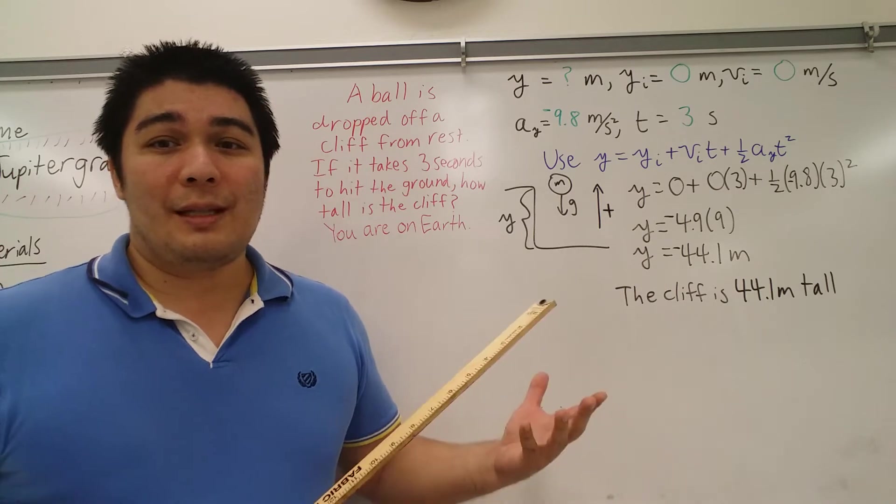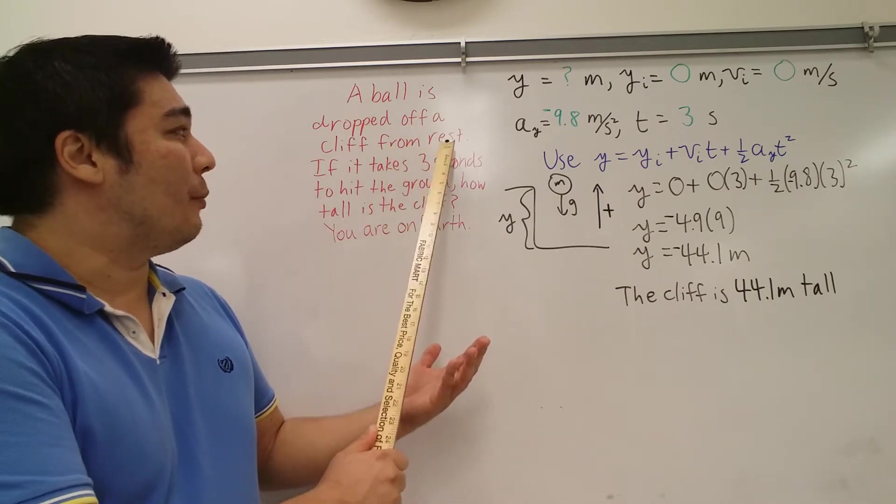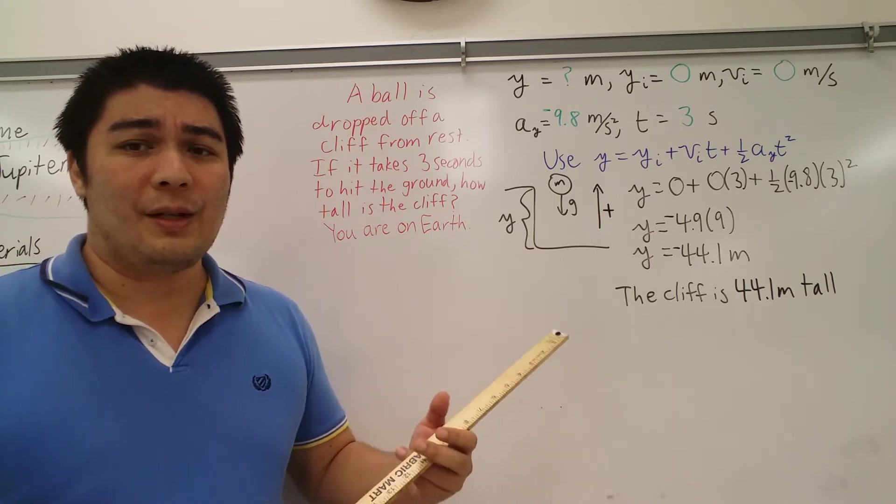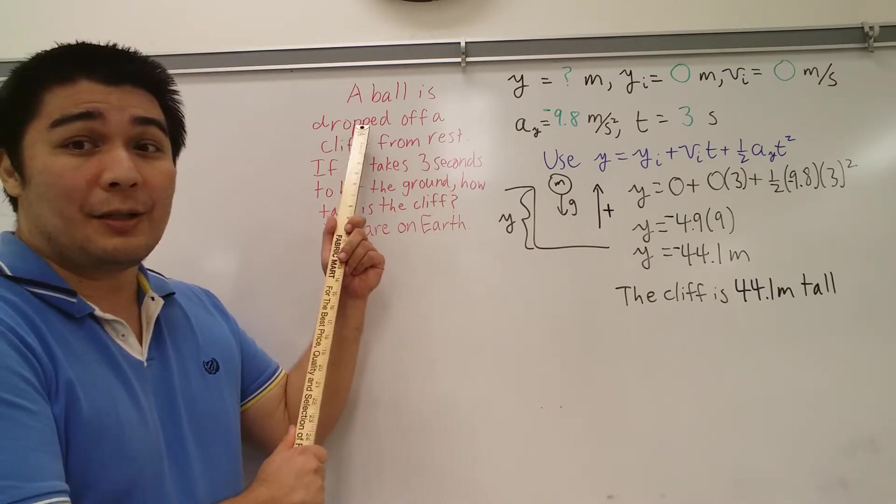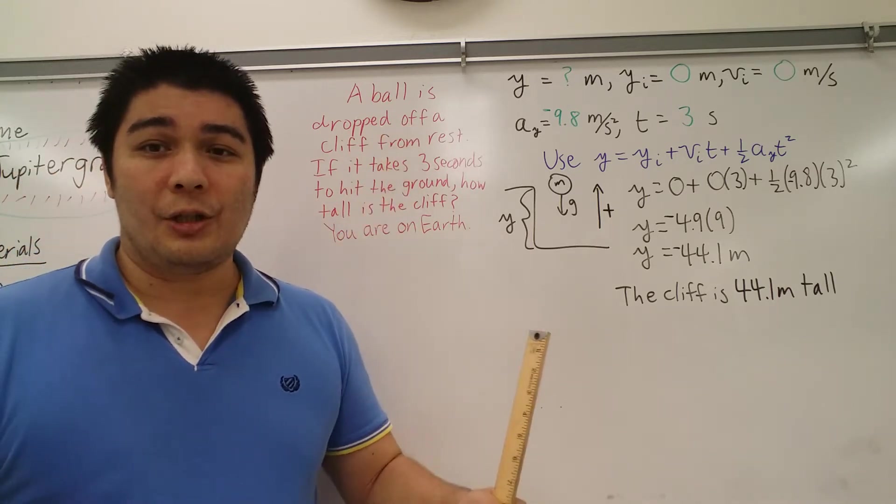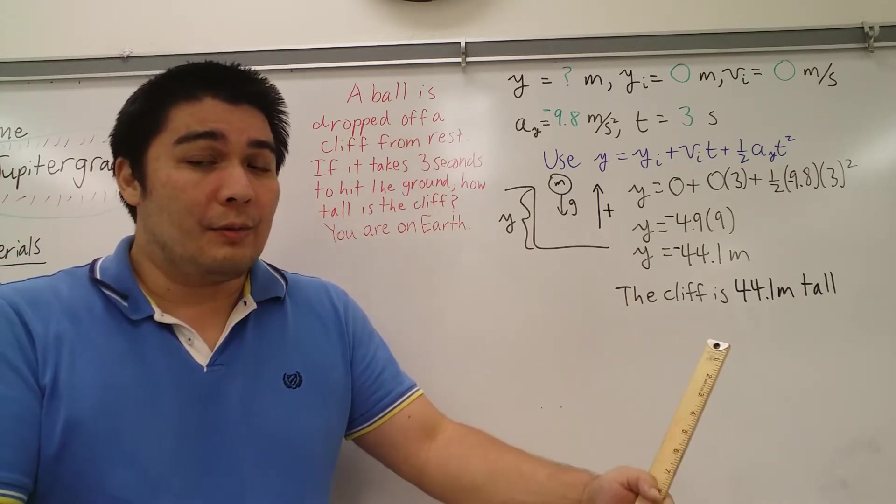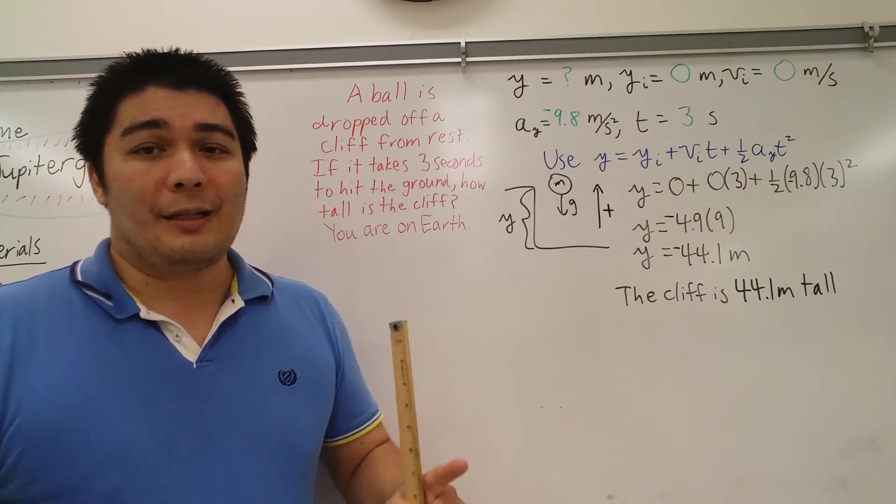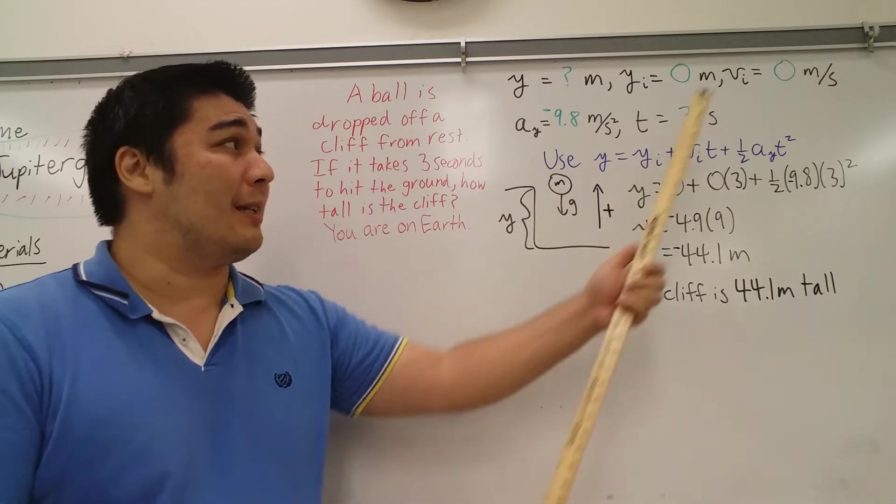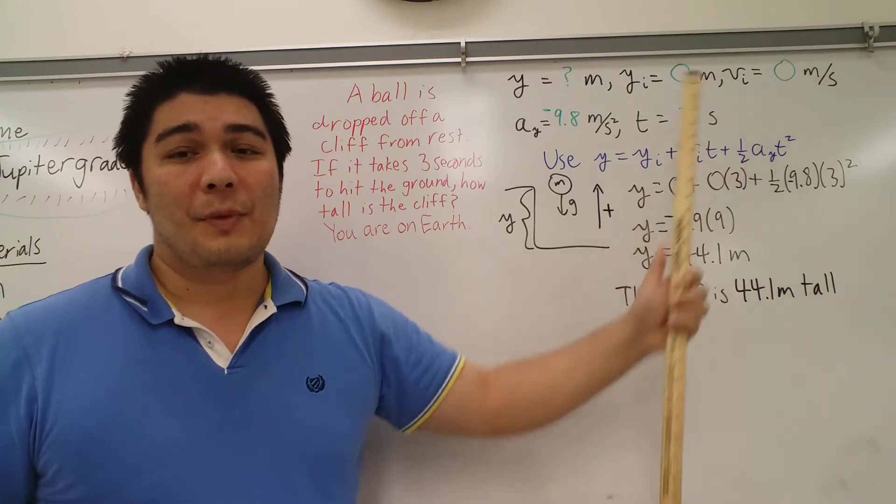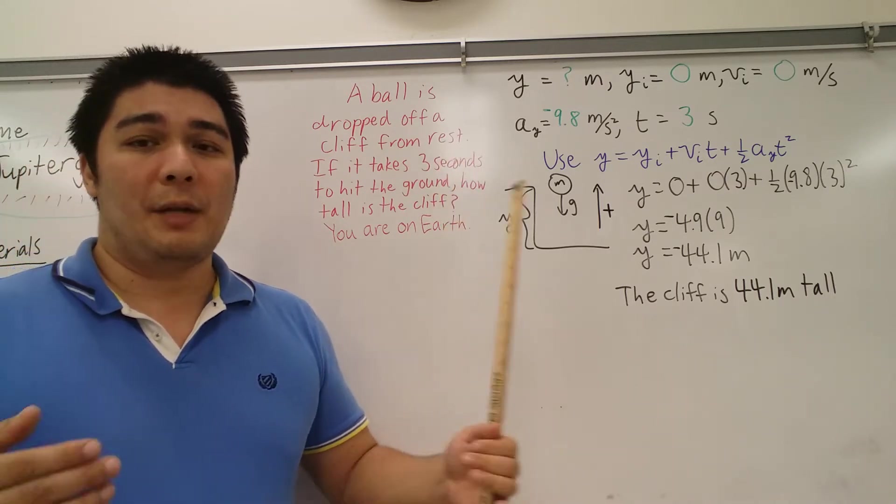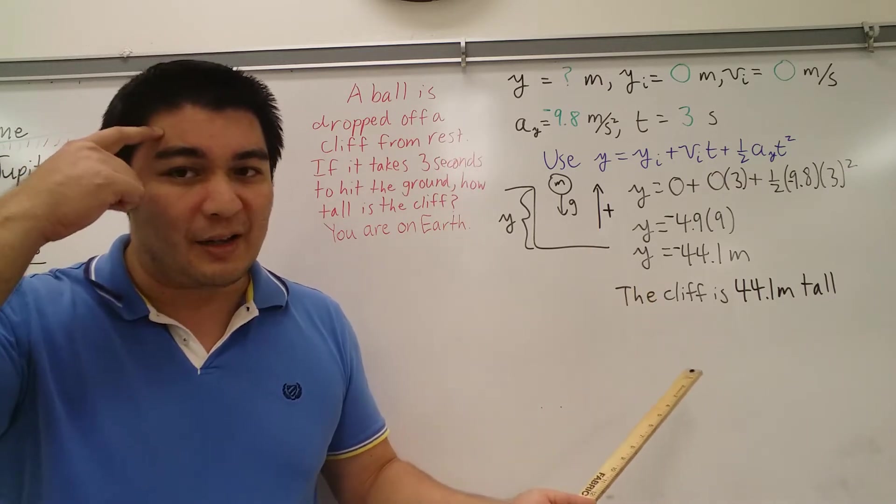So we did the same thing. Dropped off a cliff from rest. The only other thing I'd like to point out between my last video and this video is if you said dropped, that also could mean that v initial is zero. Rest is a good indicator, but just the word dropped is also an indicator that your initial velocity is zero. So those are two key words that I want you to understand. Make sure you keep that just in the back of your mind.